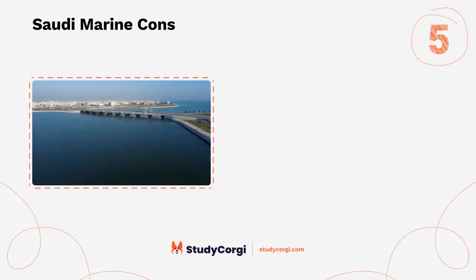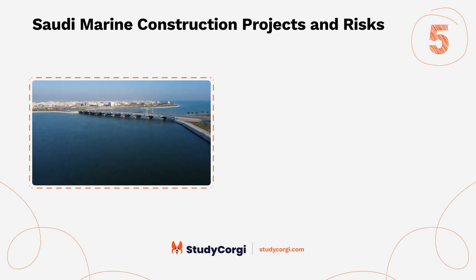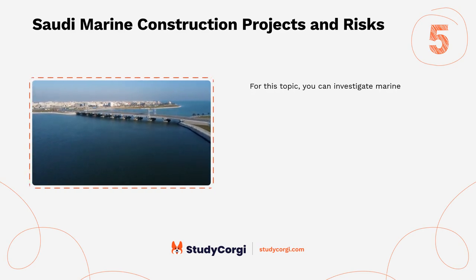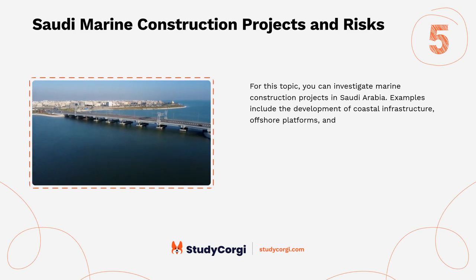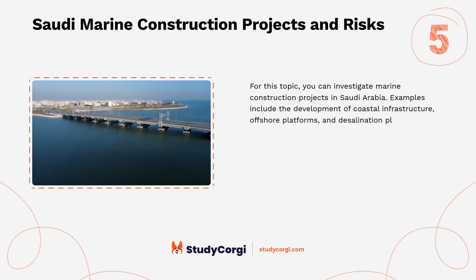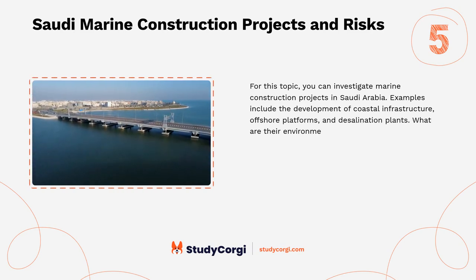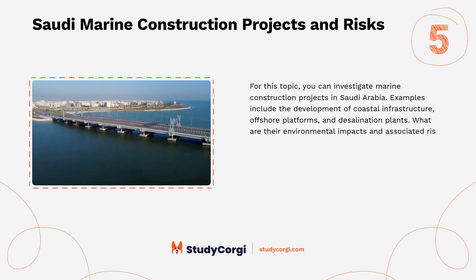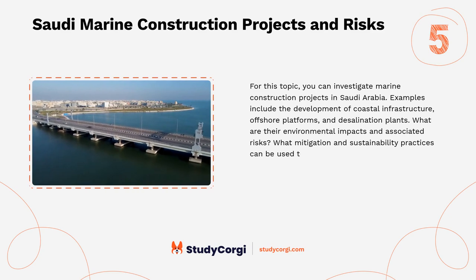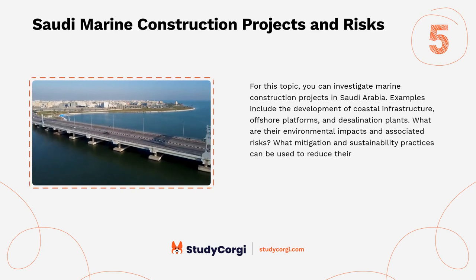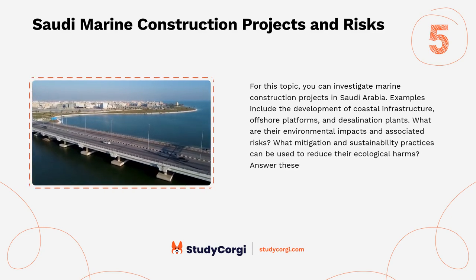Saudi marine construction projects and risks: For this topic you can investigate marine construction projects in Saudi Arabia. Examples include the development of coastal infrastructure, offshore platforms, and desalination plants. What are their environmental impacts and associated risks? What mitigation and sustainability practices can be used to reduce their ecological harms? Answer these questions in your paper.